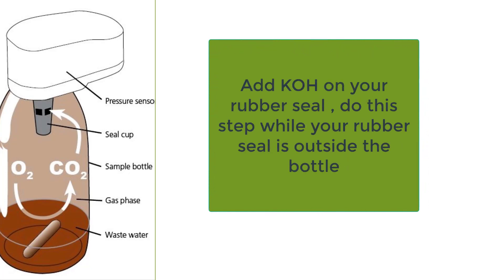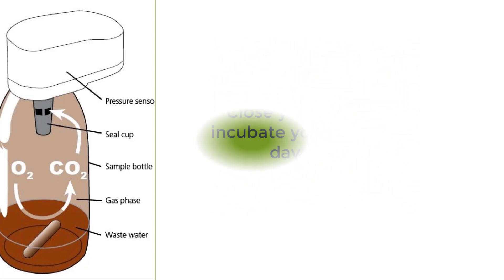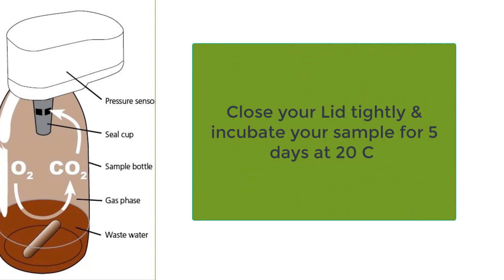Next, add KOH — potassium hydroxide — on your rubber seal. Do this step while your rubber seal is outside the bottle, to avoid getting potassium hydroxide inside the bottle, which would give you a wrong result. Then close the lid tightly.